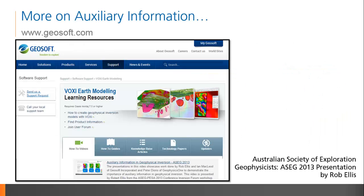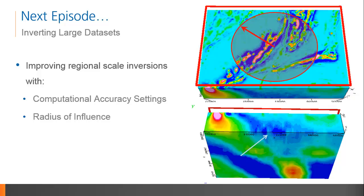This episode of our Inversion Best Practice web series focused on the effects of auxiliary information. I presented key parameters that can result in the most efficient computation of an accurate inversion model using VOXI. If you would like more information on other auxiliary parameters, watch Rob Ellis' full length ASEG 2013 presentation on auxiliary parameters for inversion at www.geosoft.com. Our next episode will present VOXI's acceleration settings and how to use them to improve the results and efficiency of your large regional scale inversions. Stay tuned for more!